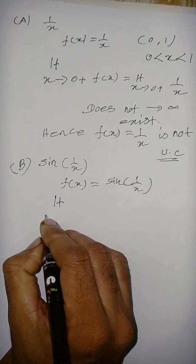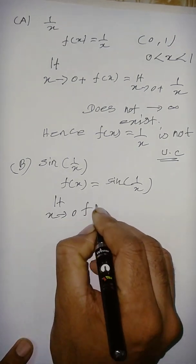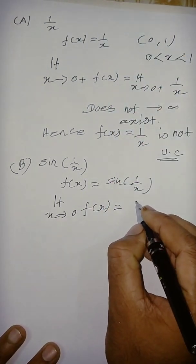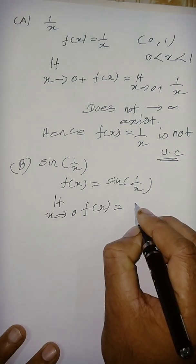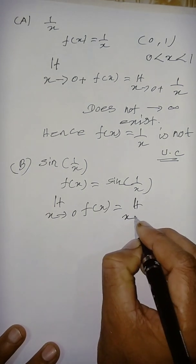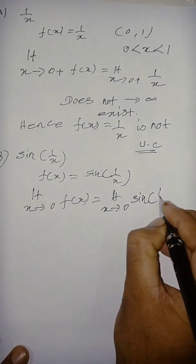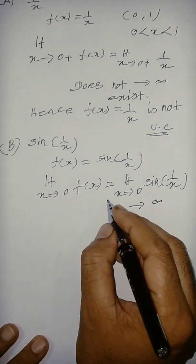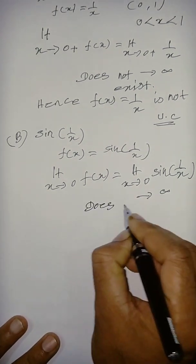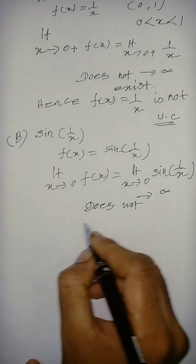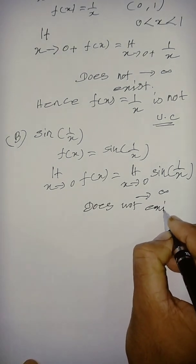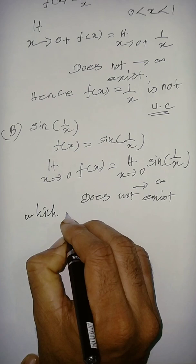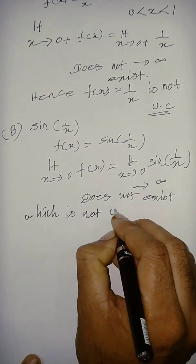The second function has the same problem at the endpoint. The limit as x tends to 0 of sin(1/x) does not exist — it oscillates. So sin(1/x) is also not uniformly continuous on (0,1).